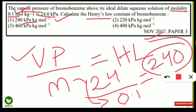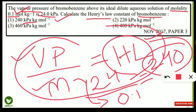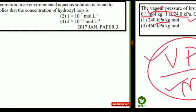You don't need to know the structure of bromobenzene — simply apply the formula: vapor pressure divided by molality gives the Henry's Law constant, and you will get the marks. Let's move to the next numerical.